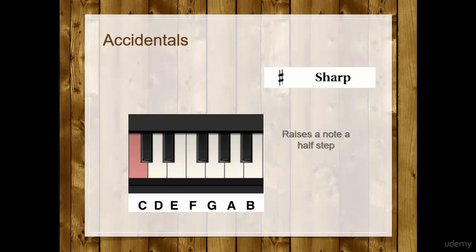For example, if I have a C note, the C note, and I want to add a sharp, the C sharp is going to be to the next key going to your right. So you go to the right, next key, you will find the C sharp.